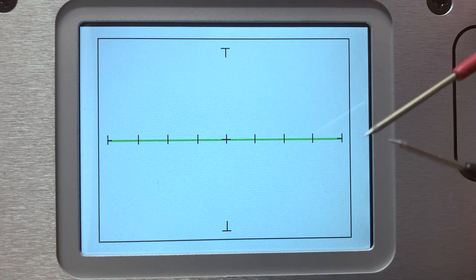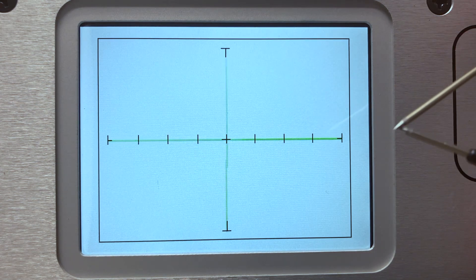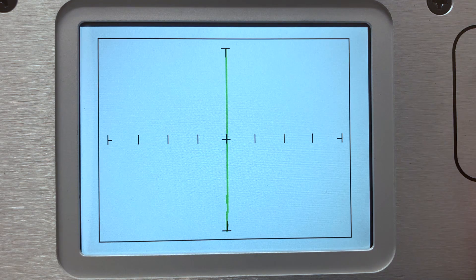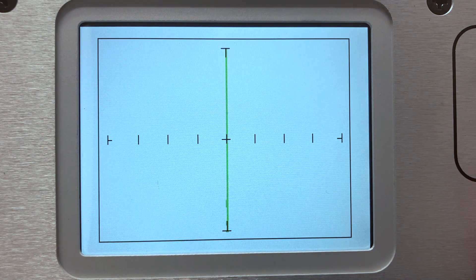The vertical axis on the display indicates current. By shorting the test leads together, a vertical signature representing maximum current flow will be displayed.